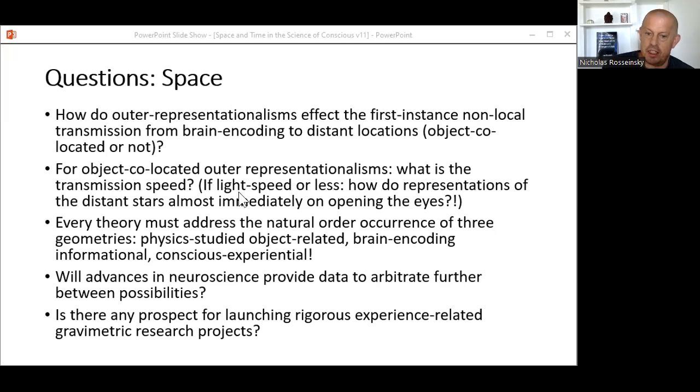If it occurs at light speed or less, how do representations of the distant stars, for example, appear almost immediately on opening the eyes? And then, although I didn't cover this in any detail in previous parts, every theory must address the natural-order occurrence of three geometries: one relating to the objects of physics studies, another to the informational locations at which the brain encodes those physics-studied objects, and a third related to conscious experiential images themselves. Then moving on to data-based arbitrations of theoretical possibilities, will advances in neuroscience provide any helpful data in the future? And is there any prospect for launching in the near-term rigorous experience-related gravimetric research projects?